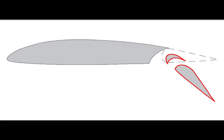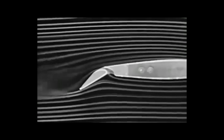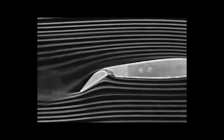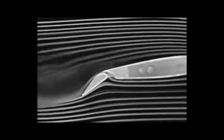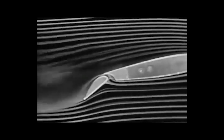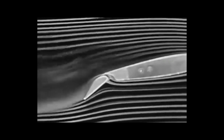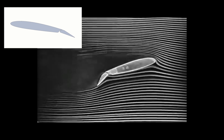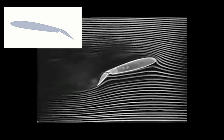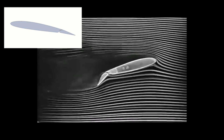Slotted flaps have a small gap between the flap surface and the wing when deployed. The purpose of the slot is to direct higher pressure air from the lower surface over the flap and re-energize the boundary layer. This delays the separation of the airflow on the upper surface of the flap.